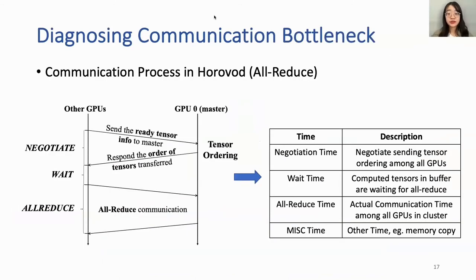To diagnose communication bottlenecks causing poor scaling performance, we collect communication traces on Horovod, a distributed deep learning framework widely used by AI practitioners. We break down communication time into four categories: negotiation time (coordinating tensor sending order among all GPUs), waiting time (from tensor fusion, waiting for all-reduce operations), all-reduce time (actual communication among all GPUs), and miscellaneous time for other operations like memory compute time.